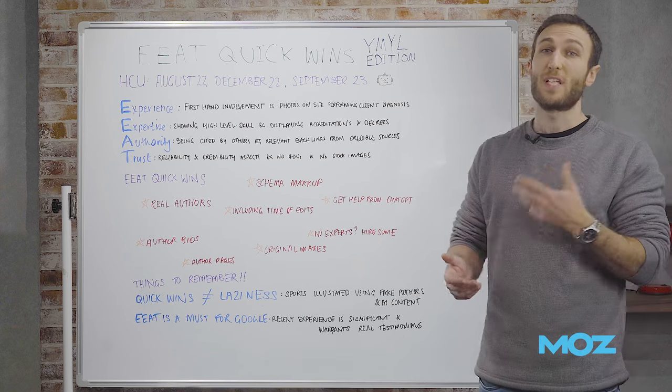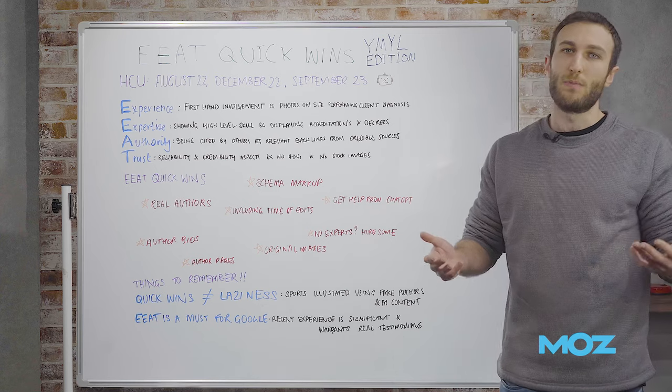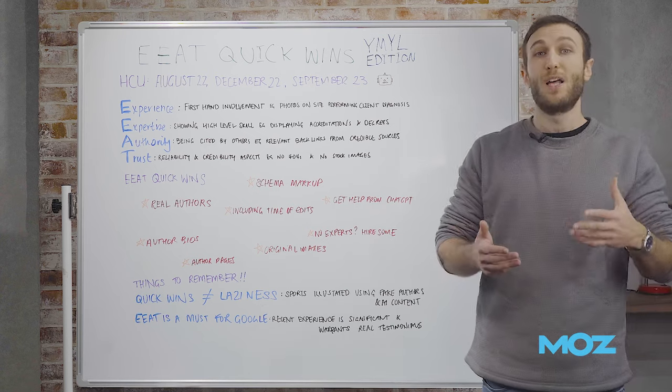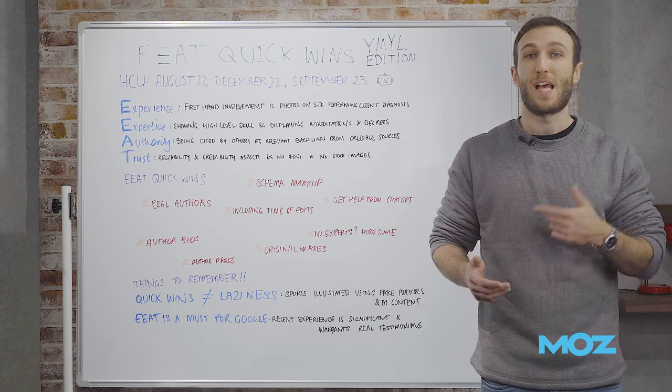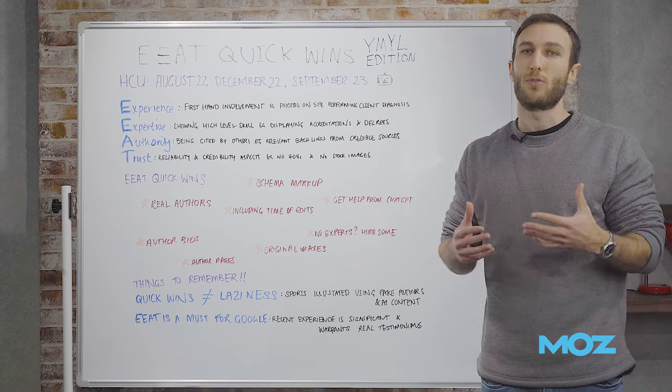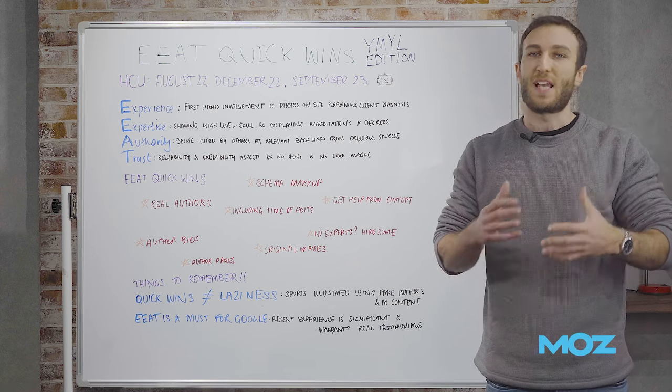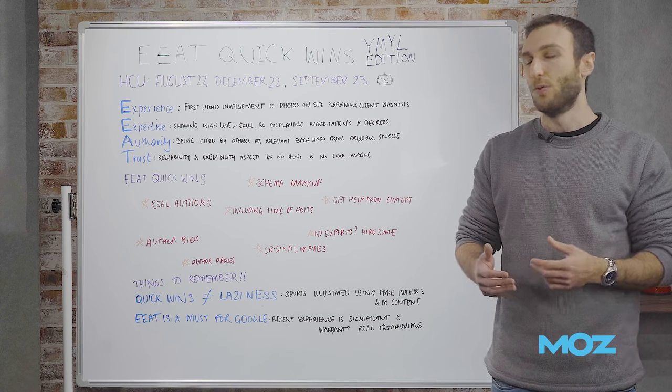The second one is expertise, which is fundamentally important, especially for YMYL niches, because it's about showing high levels of skill. Ways to do that include having accreditations and degrees listed on your website so users can see you know what you're talking about - you've been through the exams and have that level of skill in your field.